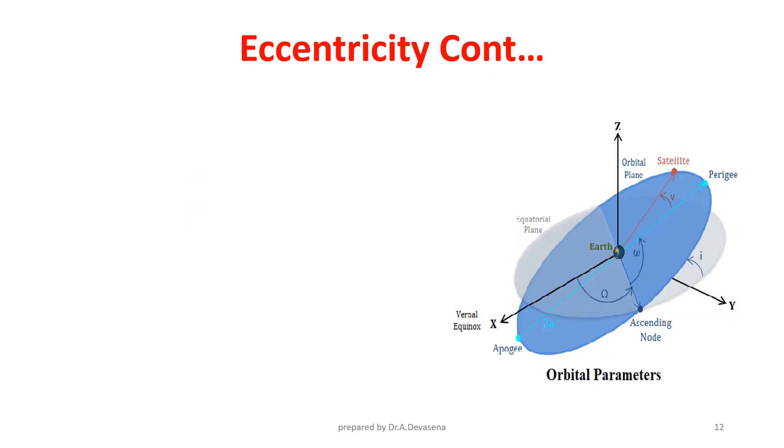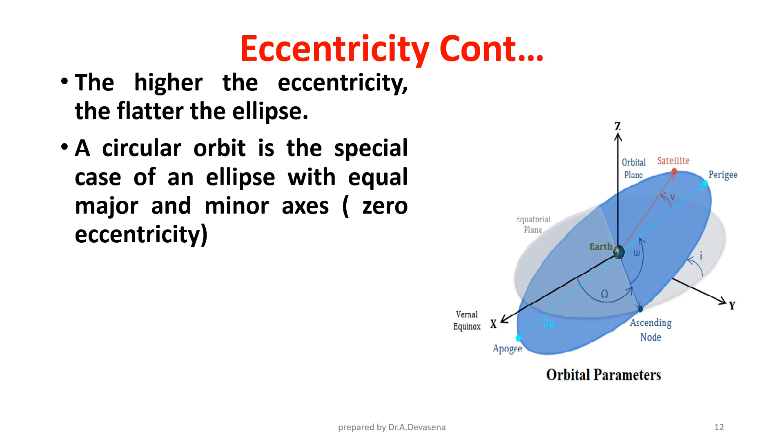The higher the eccentricity, the flatter the ellipse. A circular orbit is the special case of an ellipse with equal major and minor axis, that is zero eccentricity. For elliptical orbit, the value of E lies between zero and one. For circular orbit, the value of E equals zero.